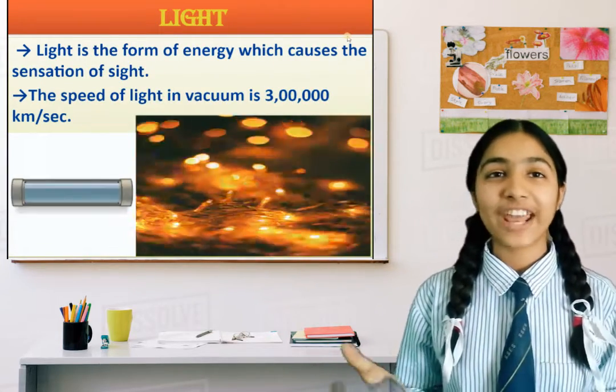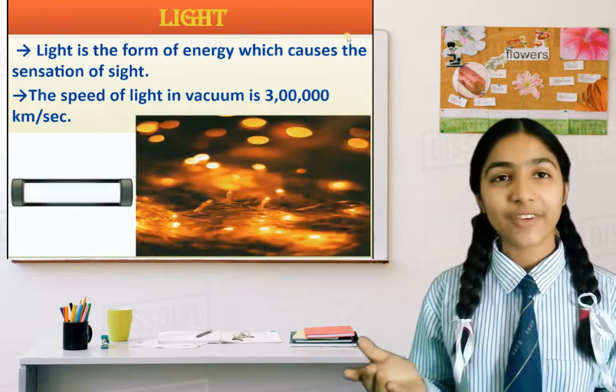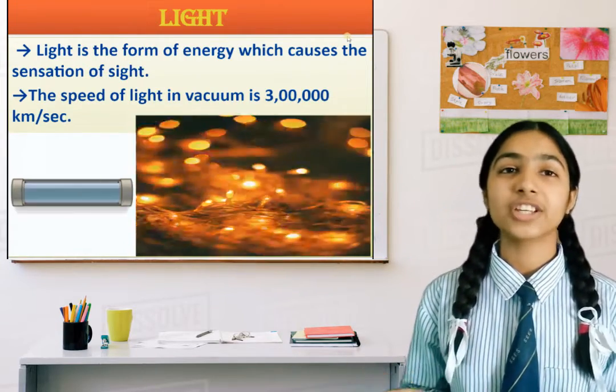Light is the form of energy which causes the sensation of sight. The speed of light in vacuum is 3,00,000 km per second.